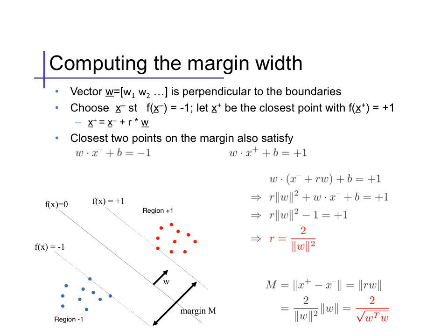So, for any parameters w and b satisfying our assumptions, in other words, all the positive data in the plus 1 region, all the negative data in the minus 1 region, the margin of w can be defined as 2 over its length.